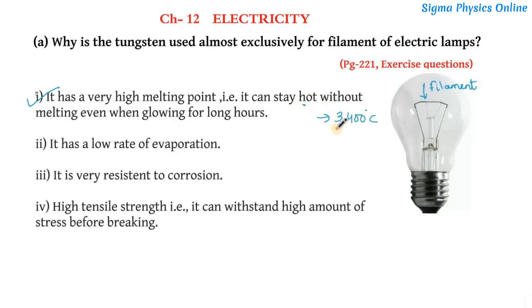So it can stay hot at this high temperature without melting when glowing for long hours. The filament needs to glow for a longer period of time and subsequently gets heated up when used, but tungsten has the ability to withstand without melting even at very high temperature. That's the reason why tungsten is used.